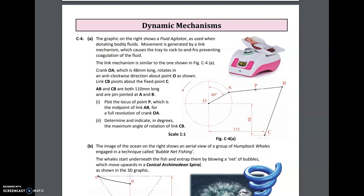AB and CB are both 110 millimeters long and are pin jointed at A and B. Plot the locus of point P, which is the midpoint of the linkage AB, for a full revolution of crank OA, and determine the inclination in degrees of the maximum angle of rotation of CB.